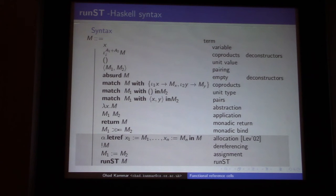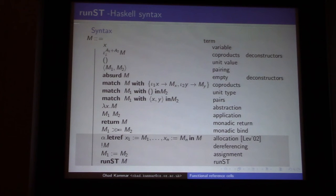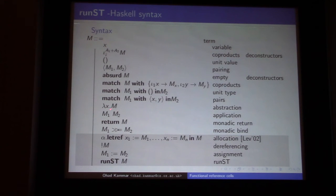This is standard but not widely known. The alpha annotations are the type variables you get in RunST — it will become clear when I show the type system. You have to put this in your term syntax because when you allocate something you have to say in which region you're allocating it. This is a Church-style system, so there's a type annotation here.